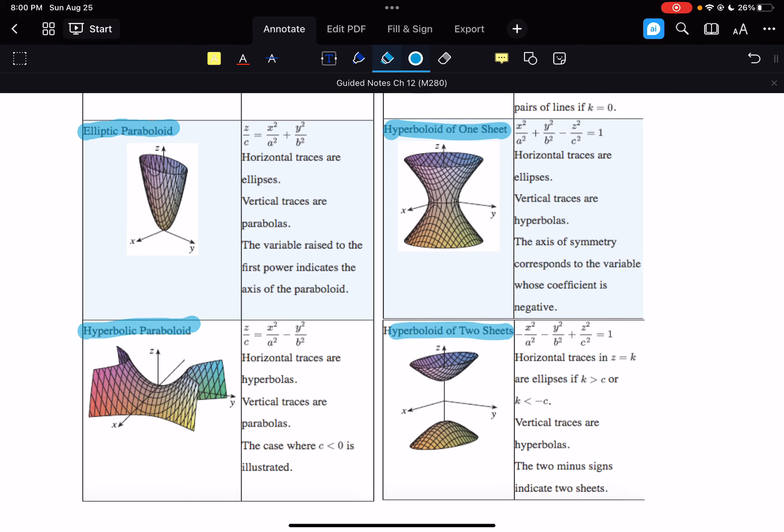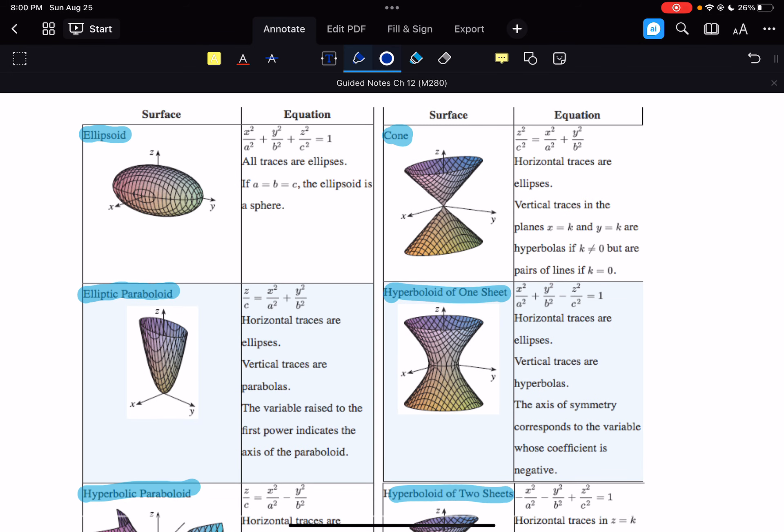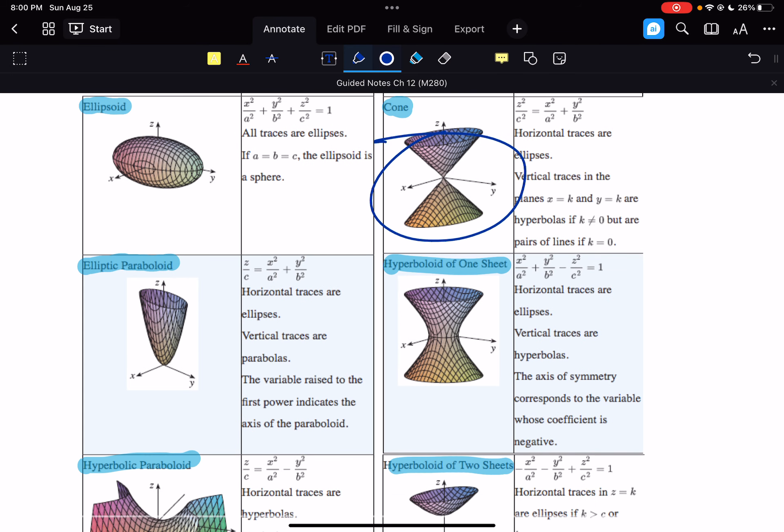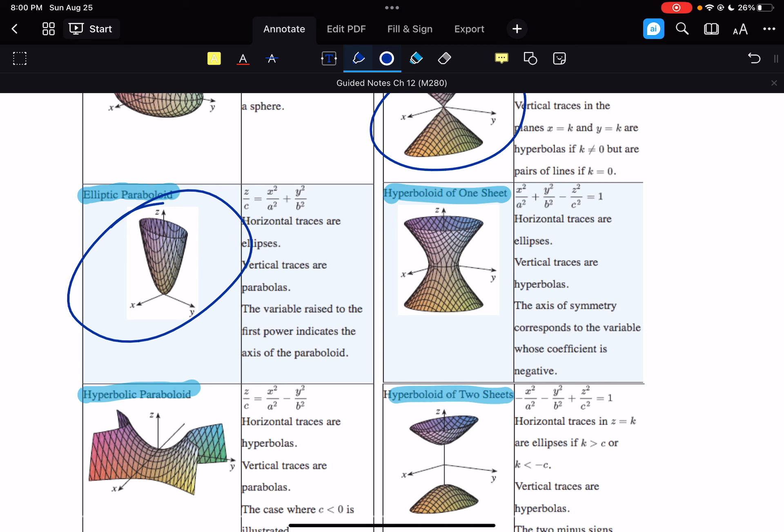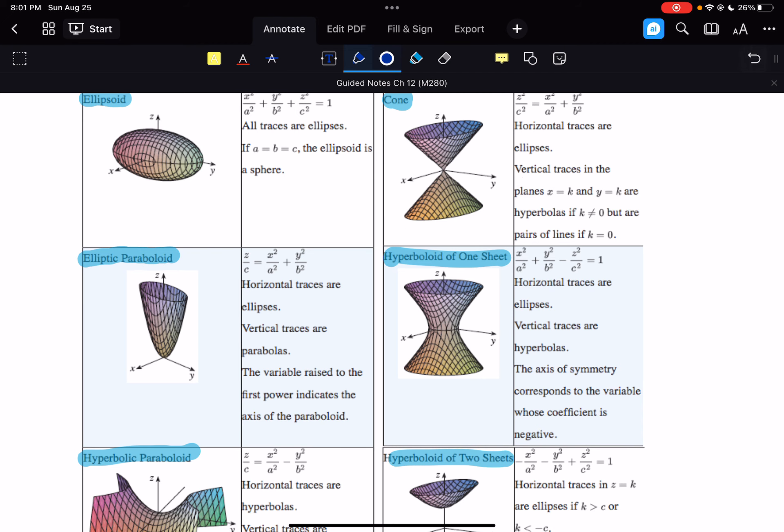And then a hyperboloid of two sheets. You can see it's kind of like this one, but then it splits in the middle. So, these are some just common examples of things we might encounter. Some more than others, we'll work with cones quite a bit, paraboloids quite a bit, and maybe some hyperbolic paraboloids as well. Those are probably the most common ones that we're going to encounter.